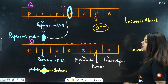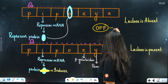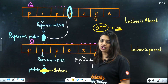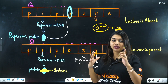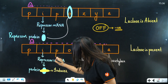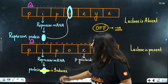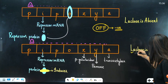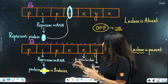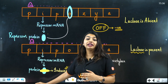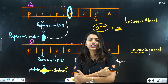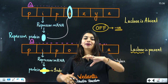When lactose is absent and the gene is switched off, this is called negative regulation. To switch the gene on — when glucose is less and lactose is present — the I gene still forms repressor mRNA and repressor protein, but here lactose acts as an inducer. The inducer lactose binds to the repressor protein, preventing it from binding to the operator.